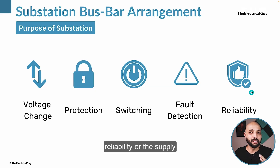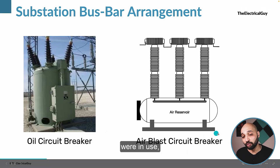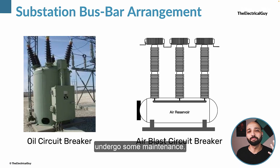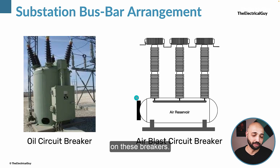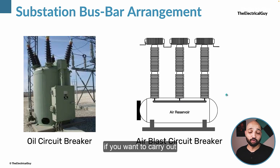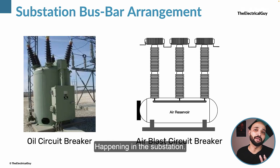Taking the example of reliability and supply continuity — when oil circuit breakers and air blast circuit breakers were in use, they needed frequent maintenance. Their operating mechanisms had to undergo maintenance in order to perform properly, and hence frequent maintenance used to happen on these breakers. As a result, if you wanted to carry out maintenance, you had to interrupt the supply, so there were frequent interruptions happening in the substation.